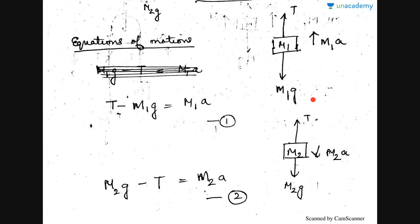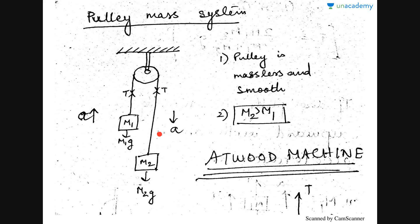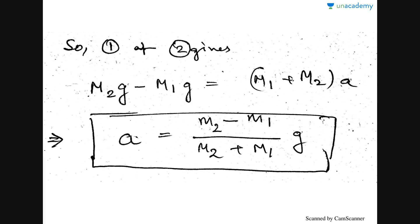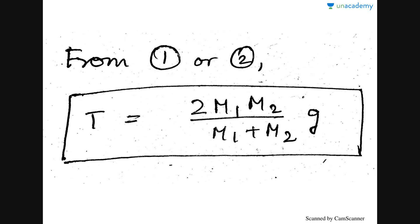For the second body, m2 is moving downwards. We have the upward tension, the downward weight, and the downward movement of the body. So m2g minus T equals m2a. Adding these two equations, T cancels (positive in one, negative in the other), giving: m2g minus m1g equals (m1 plus m2) times a. From this, the acceleration of the pulley-mass system is given by that formula — remember this, it is very important for your problems.